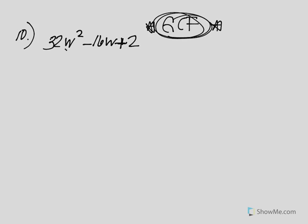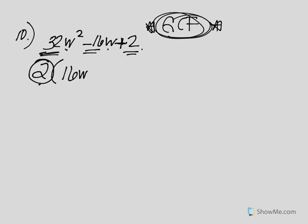Looking at my trinomial, I can't pull out a variable because this last term has no w. But with the constants 32, negative 16, and 2, I can pull out a 2. When you pull out that 2, you still have to keep it in front — it can't disappear. Dividing each term by 2 gives 2(16w² - 8w + 1). Now factor the trinomial inside. The first term's coefficient is larger than one, so use the five-step. Multiply 16 times 1 to get 16. List the factors of 16: 1 and 16, 2 and 8, 4 and 4.